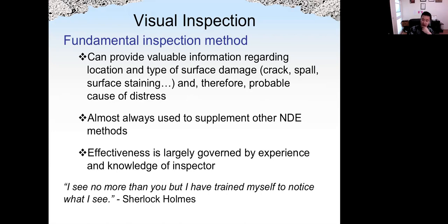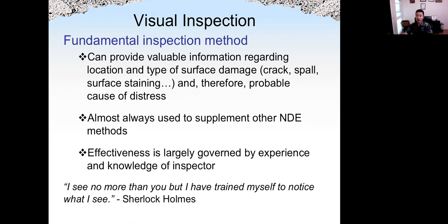Visual inspection is a fundamental inspection measure. It can provide valuable information about location, the type of surface damage, and also the probable cause of distress. For example, if the crack is due to corrosion, we may see the spalling of the concrete cover above the rebar, and we may also see the surface stain coming out of the cracks because of the corrosion product. For cracks due to alkali-silica reaction or ASR, we may see the crack pattern as a map crack, and we may also see a whitish gel coming out of the cracks. Visual inspection is almost always used to supplement other NDE methods, and its effectiveness is largely governed by the experience and knowledge of the inspector.